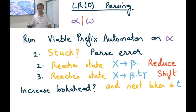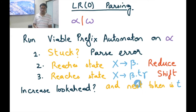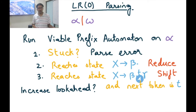One way to improve precision is to increase the lookahead. By looking at the next token T, we can rule out certain options. For example, with a shift-reduce conflict — a reduce state X→β• and a shift state X→β•Tγ — if the next token is not T, we can rule out the shift, because the NFA would have expected T but instead found T', causing it to get stuck and leading to a non-viable prefix.